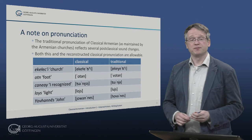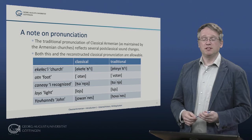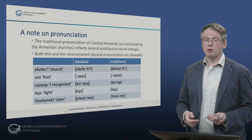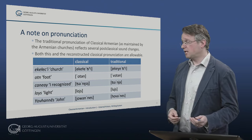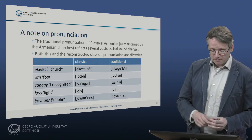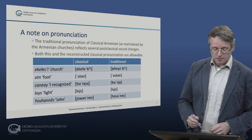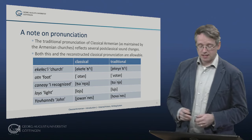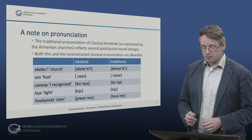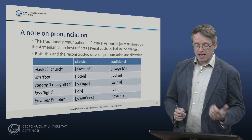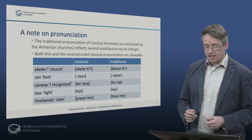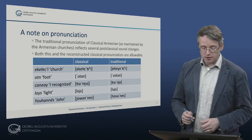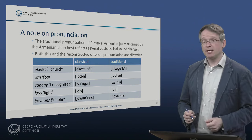Another note on pronunciation. The traditional pronunciation of Classical Armenian as maintained by the Armenian churches — the one I also follow — reflects several post-classical sound changes. For example, the classical pronunciation of the word for 'church' would be yekeleci, while the traditional church pronunciation would be yekeleci, meaning that word-initial R acquires an additional glide in front of it, and the velarized L of Classical Armenian has become a velar fricative R.